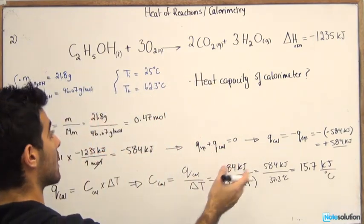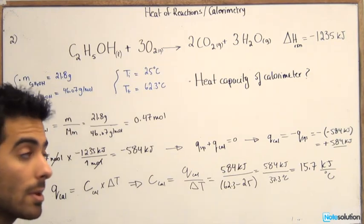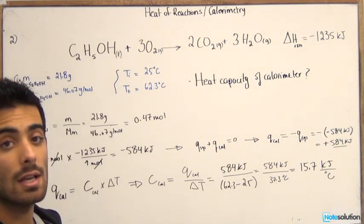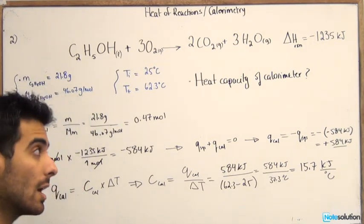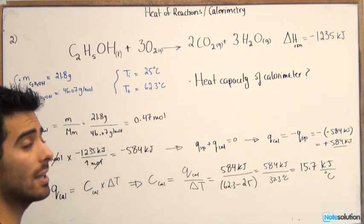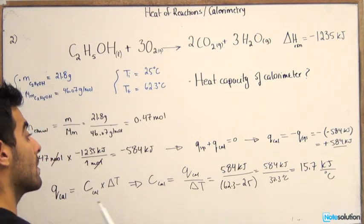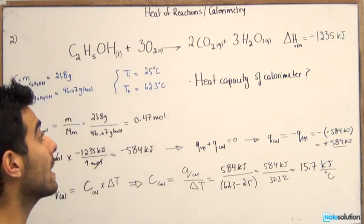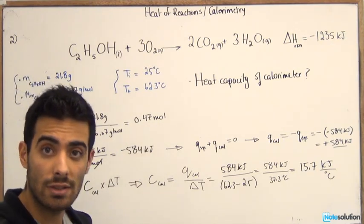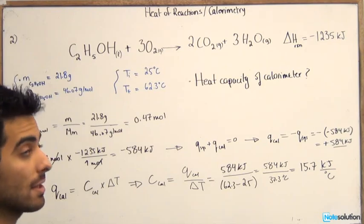And this, guys, is your heat capacity of the calorimeter. So as you can see, you're always going to be given either delta H reaction, or you're going to be given the information about the calorimeter and expected to find the delta H reaction of a specific experiment.